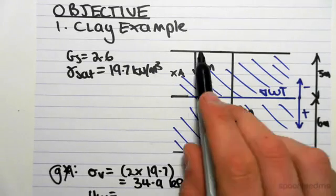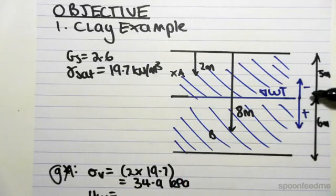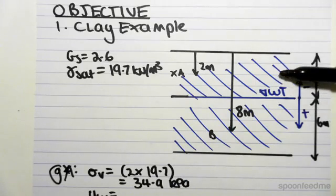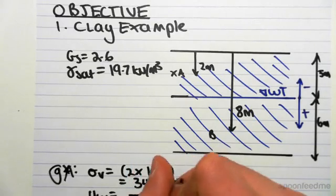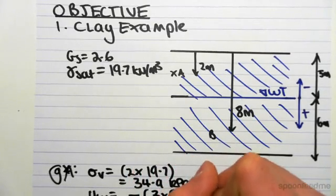And we're going up to a point 2 meters below the surface. So in other words, because this depth is 5 meters, we're going up 3 meters. So the pore water pressure will be minus 3 by 9.81.